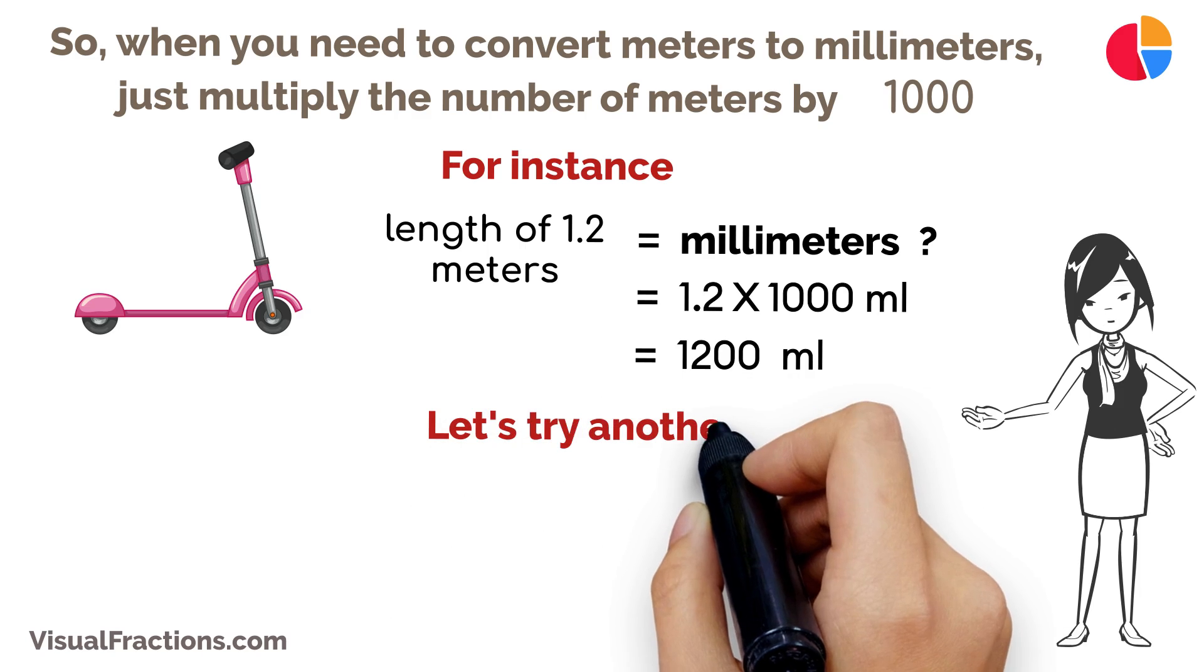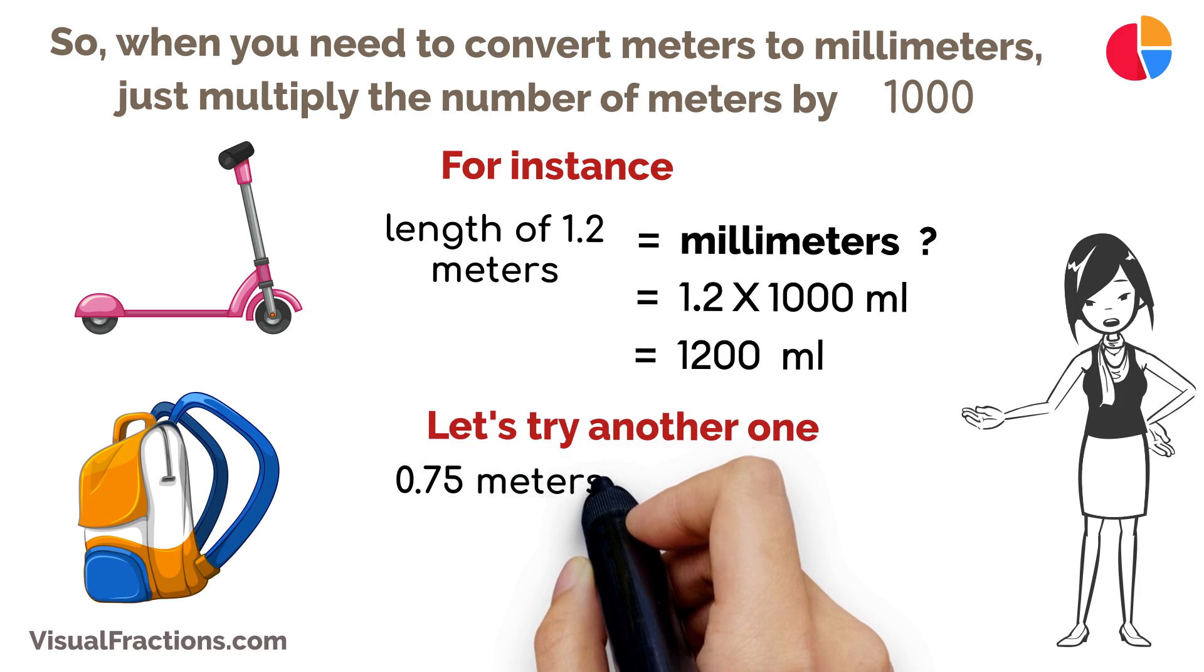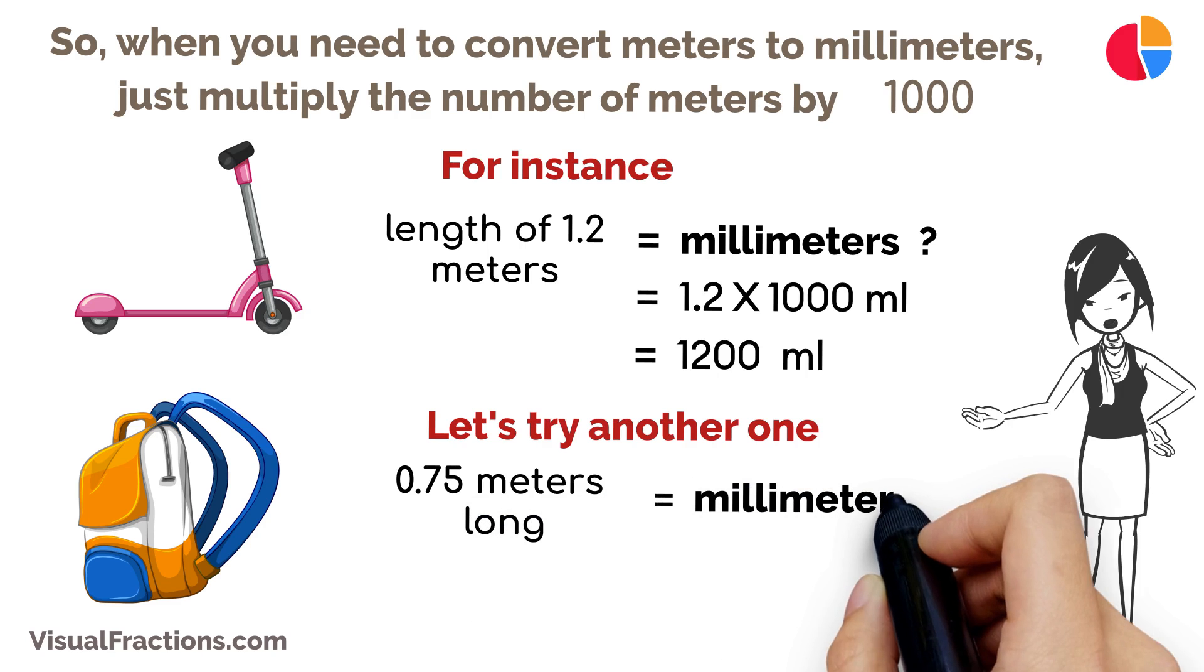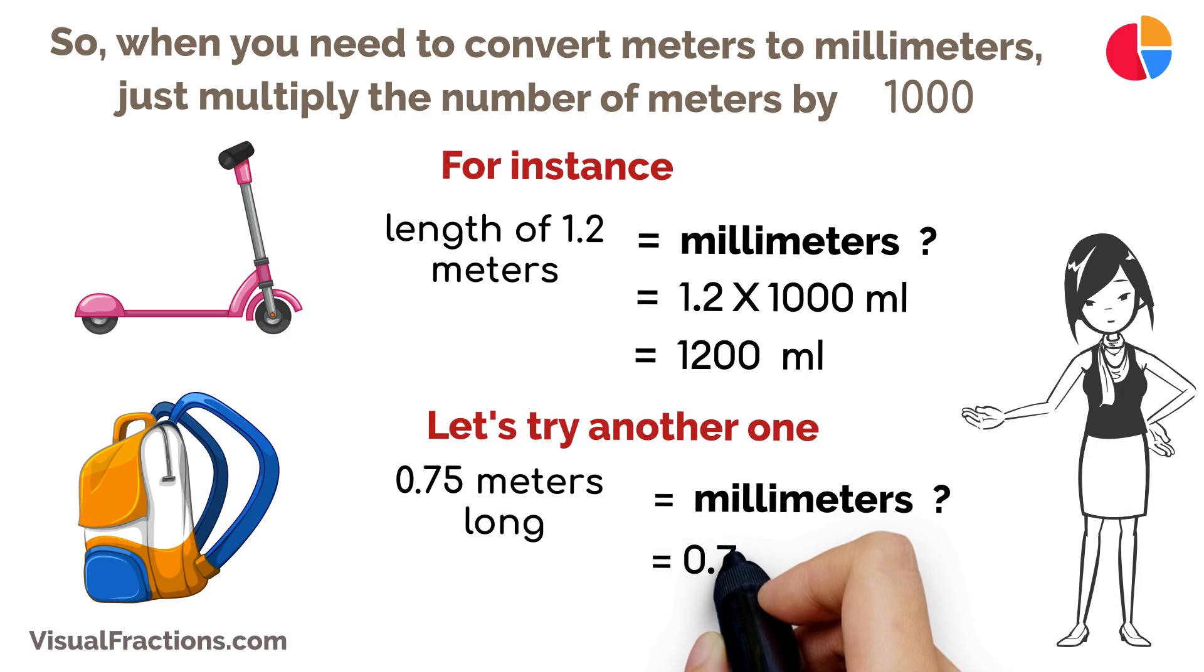Let's try another one. If you have an object that's 0.75 meters long and you need to convert that to millimeters, you do 0.75 meters times 1,000, which equals 750 millimeters.